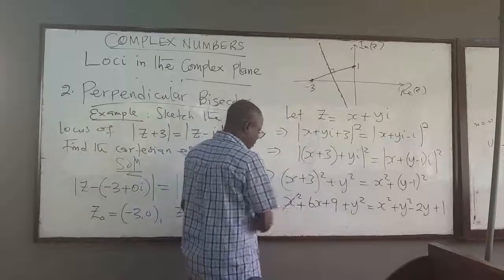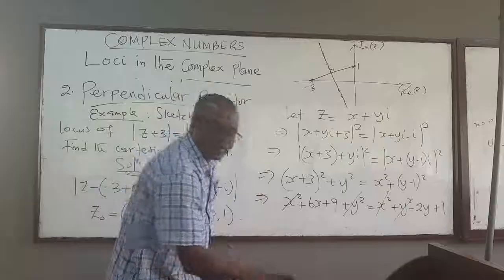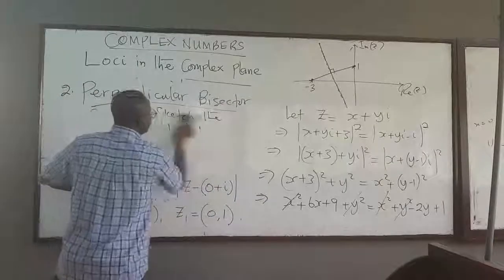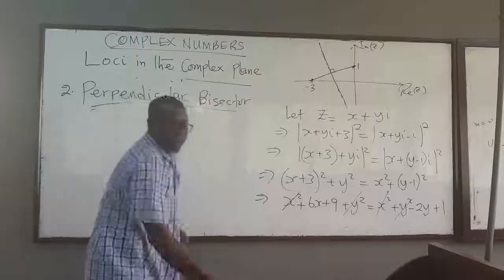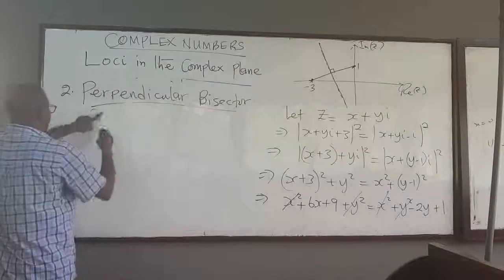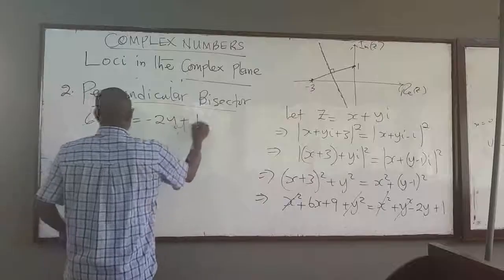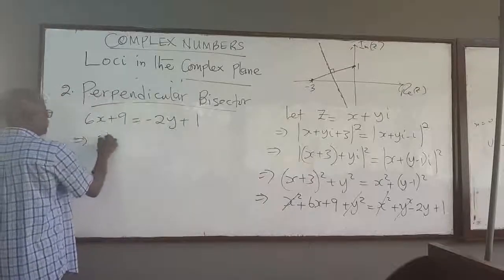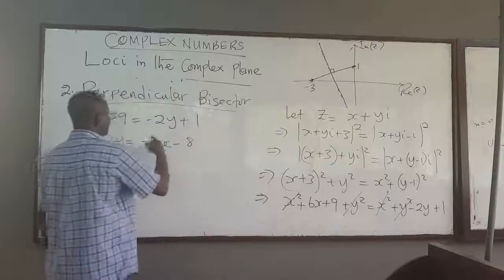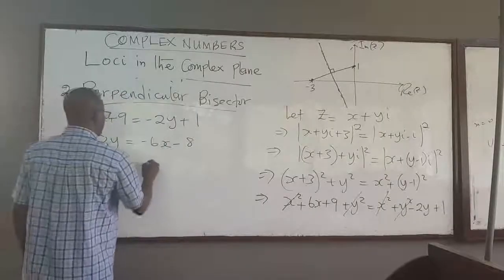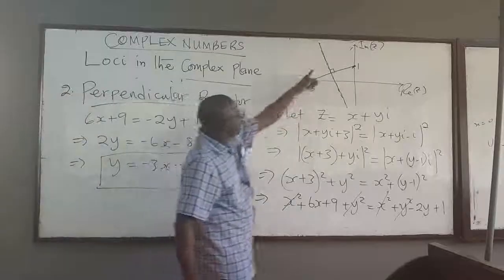Now expand them. On the left: x² + 6x + 9 + y². On the right: x² + y² − 2y + 1. Obviously, the x² will cancel out and the y² will also cancel out. We deal with what is left: 6x + 9 = −2y + 1. Bringing y here: 2y = −6x − 8, which means 1 minus 9 is −8. So y = −3x − 4. This equation is the Cartesian equation of that locus of points.